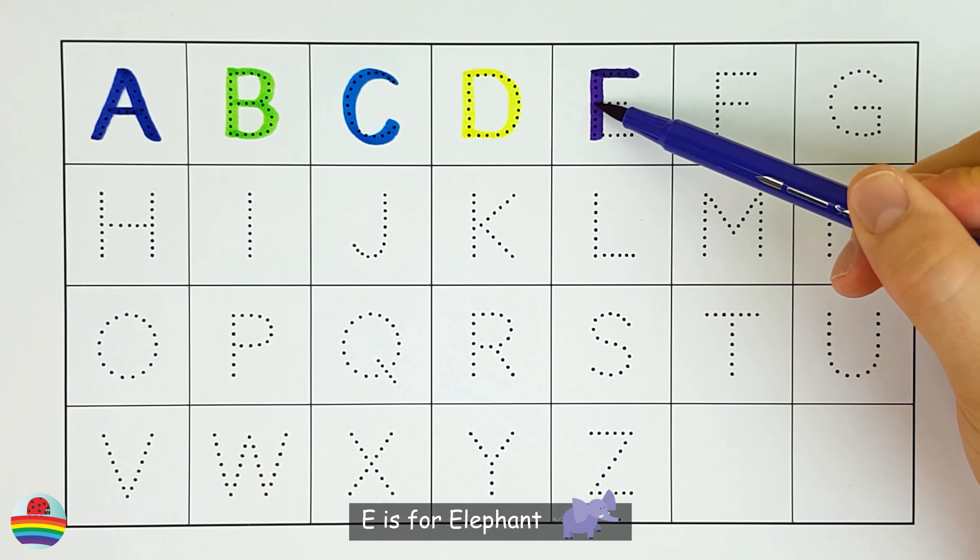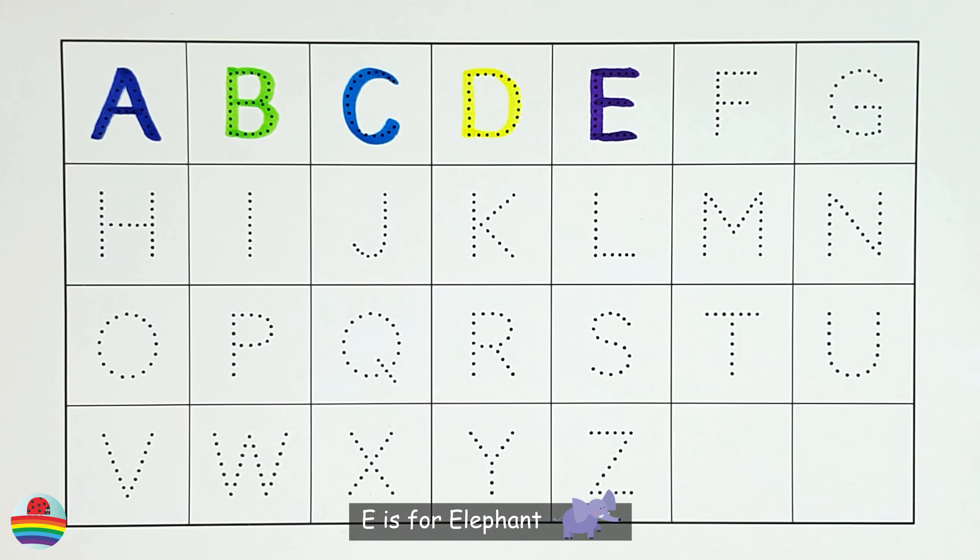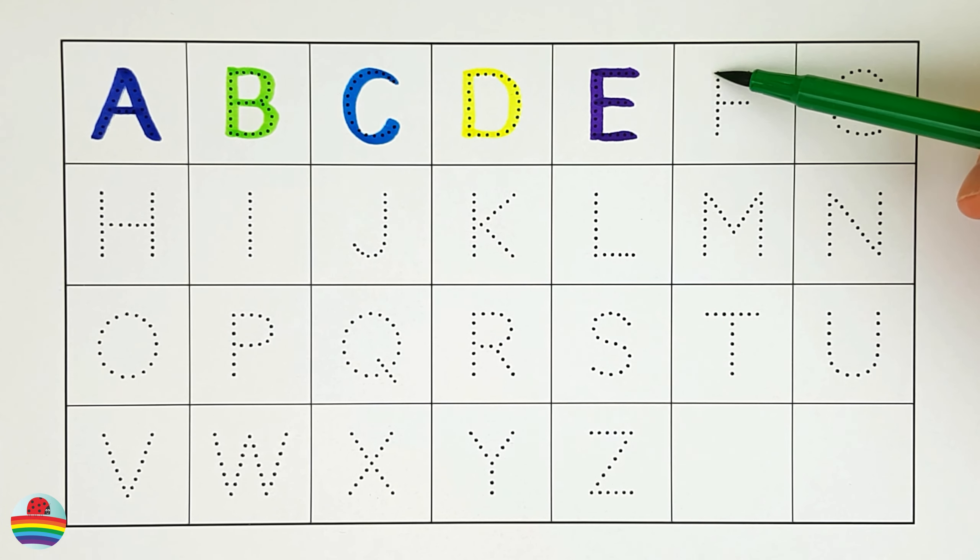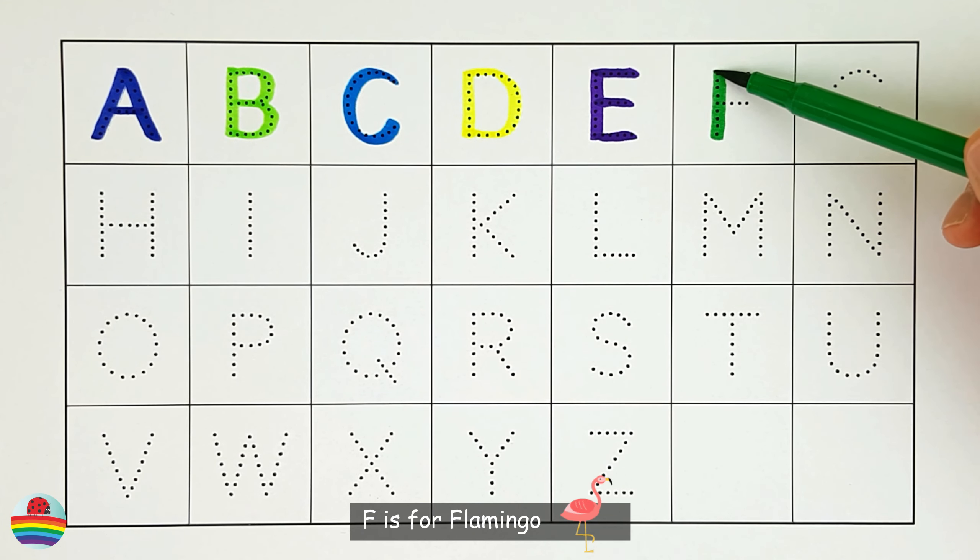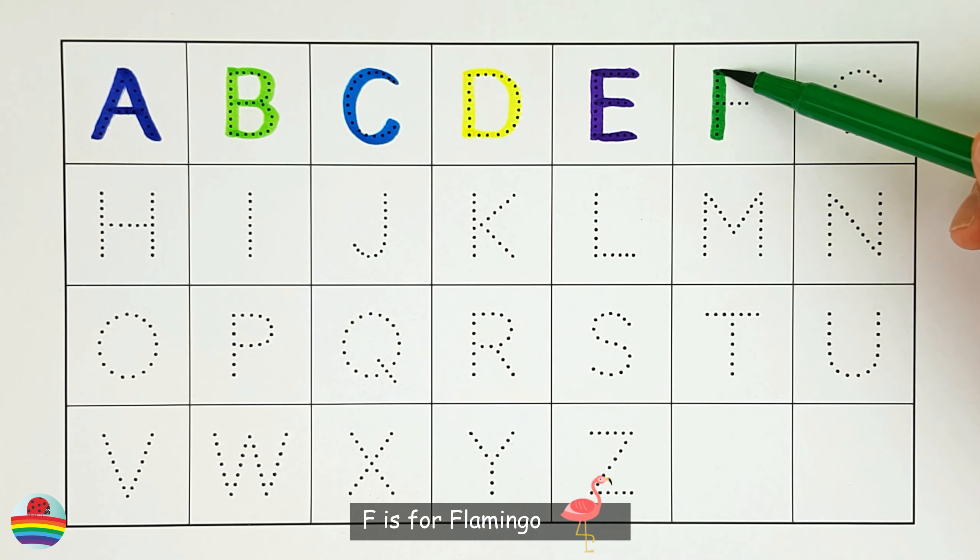E. E is for Elephant. E. F. F is for Flamingo. F.